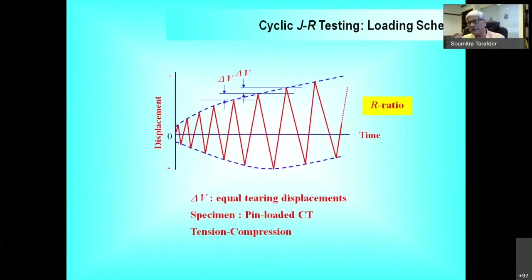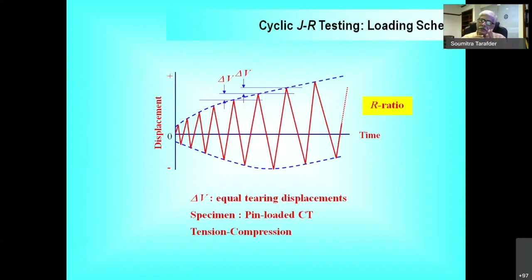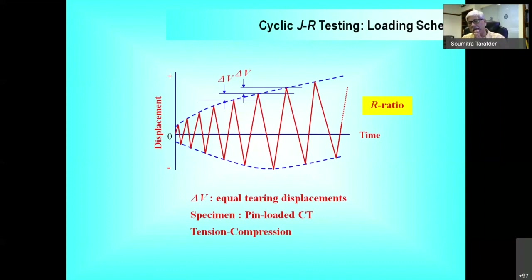Moving to another facet of fracture toughness for the same material: what happens if there is a crack in a pressure vessel made of 20MnMoNi55 and you have a seismic event? You suddenly have the load going up and coming down, and that crack might tear. So you require a fracture toughness — but are you using the correct fracture toughness for a situation where the load is going up and down, as in a seismic event?